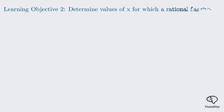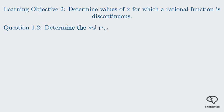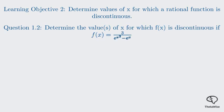Our objective here is to determine where a given function is discontinuous. The question asks us to find the value or values of x for which the function f(x) equals 3 over e to the power of x squared minus e to the power of x is discontinuous. Let's first understand what discontinuity means. A function is discontinuous at a point if its graph has a break there. For rational functions like this, breaks occur when the denominator is 0.